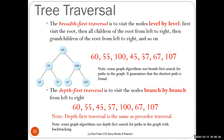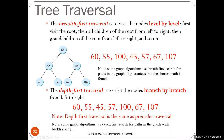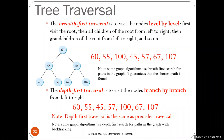Depth-first search is similar to pre-order traversal — you go down one branch as far as possible, then backtrack. For the example tree it gives: 60, 55, 45, then backtrack to 57, then backtrack up and read 100, 67, then backtrack and read 107. Graph algorithms use depth-first search with backtracking: try a branch, and if the target isn't found, backtrack to the parent and try another path.